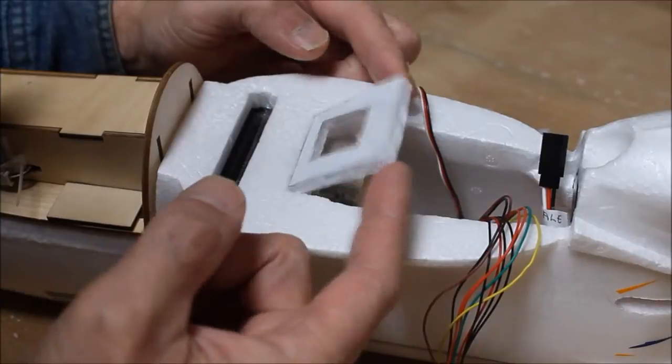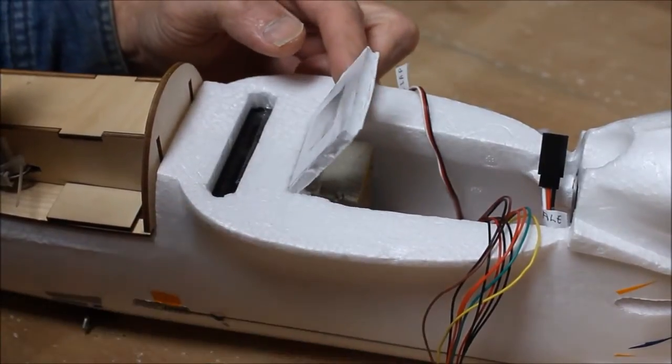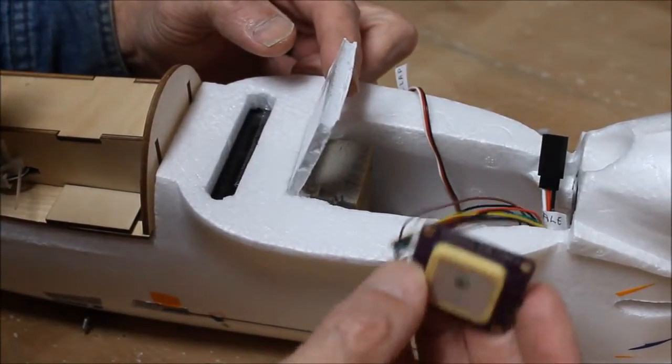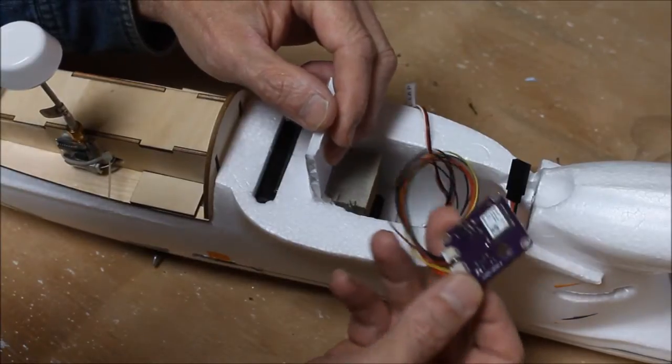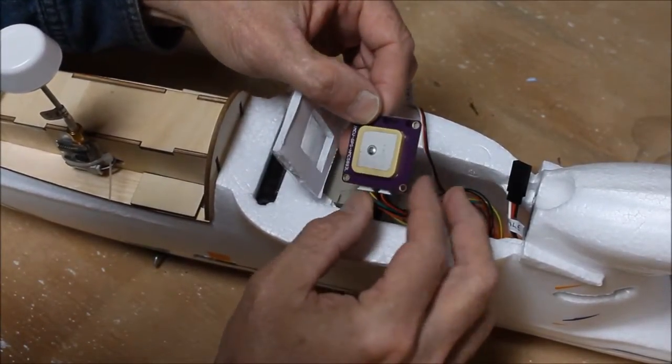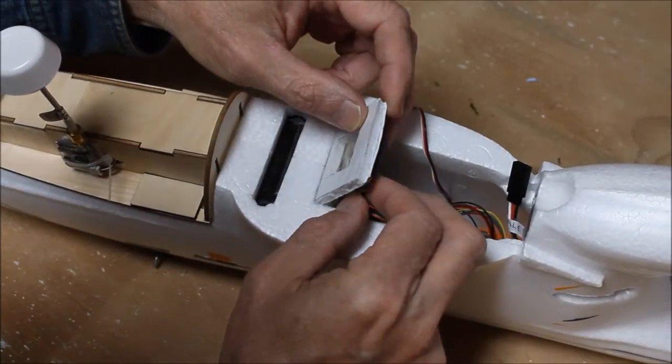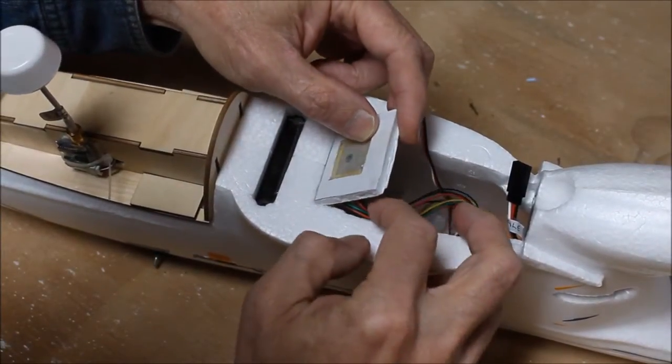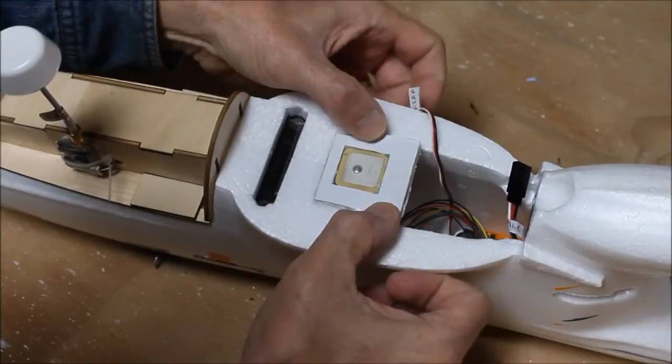However, in this case, instead of contact adhesive, a packing tape hinge keeps the cradle from moving forward and aft, and a foam block cut from a 3M sanding pad locks both the APM and GPS vertically when the wing bolts are fastened.